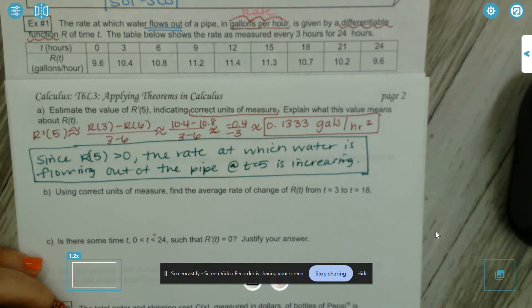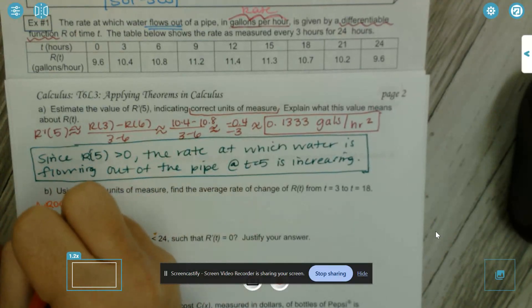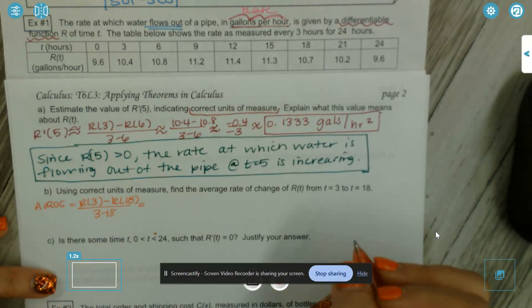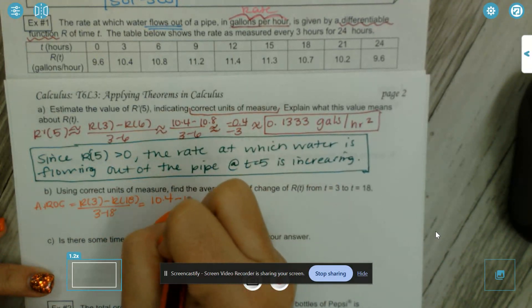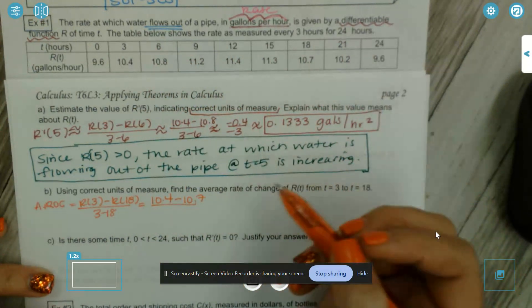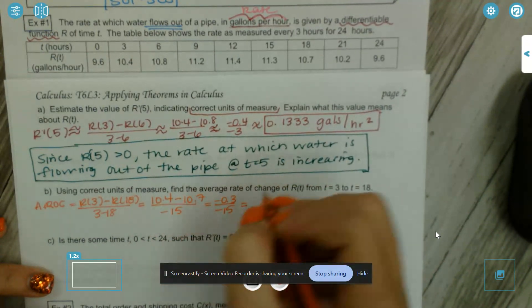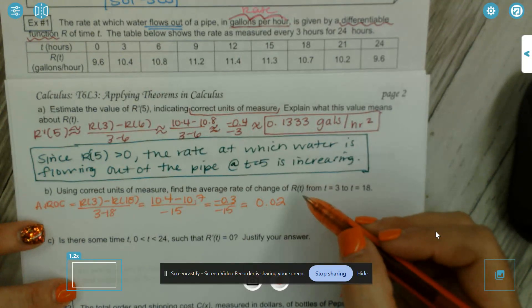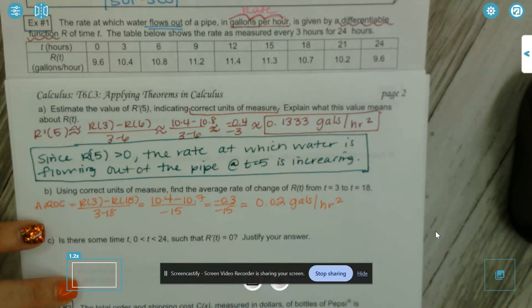Using correct units of measure, find the average rate of change of r(t) from t = 3 to t = 18. AROC = (r(3) − r(18)) / (3 − 18) = (10.4 − 10.7) / (−15). This is another rate of change, so the units will again be gallons per hour squared — gallons per hour per hour.